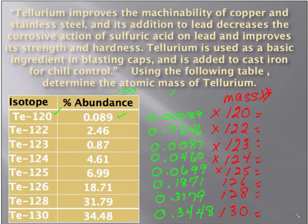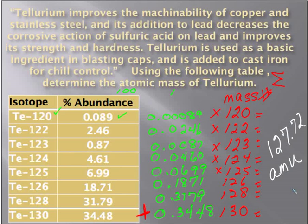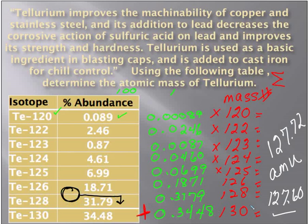Then we add all of those products together, because atomic mass is the sum of all of these. If we added all of those up, you would get a value of 127.72 atomic mass units, and that's what would be put on the periodic table — or very close to it. You also want to be able to estimate roughly what the value should be. Notice that two-thirds of the weighted average is 128 to 130, so we would expect the result to fall closer to that range.